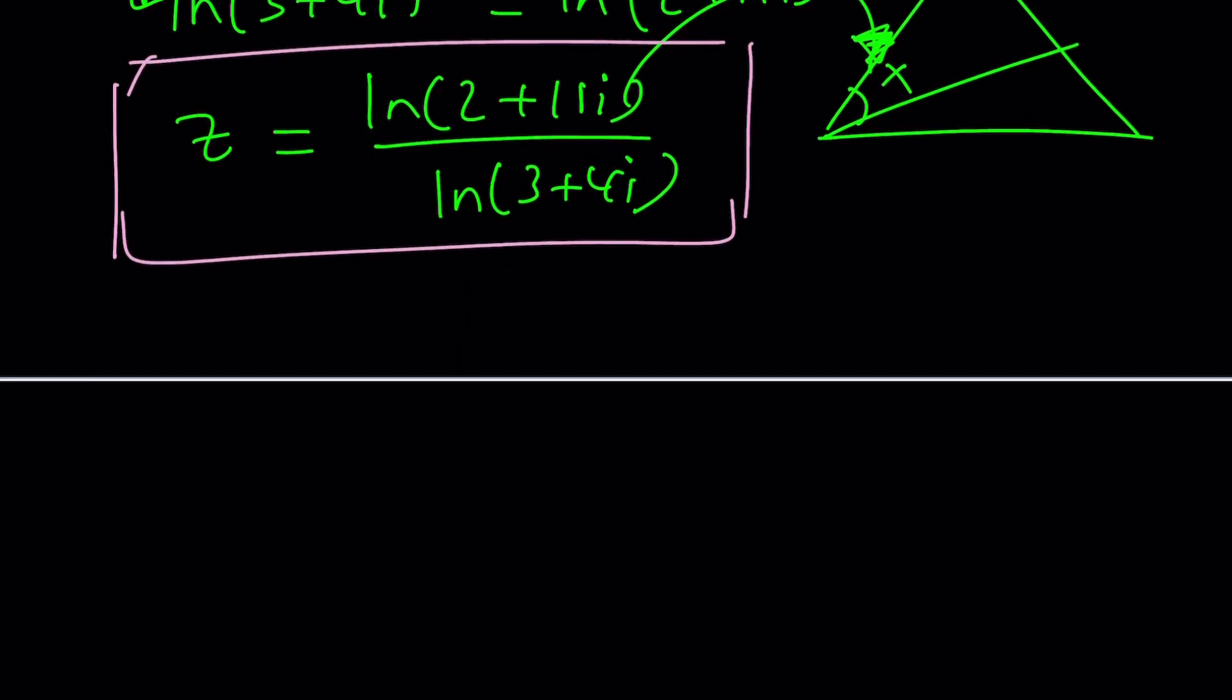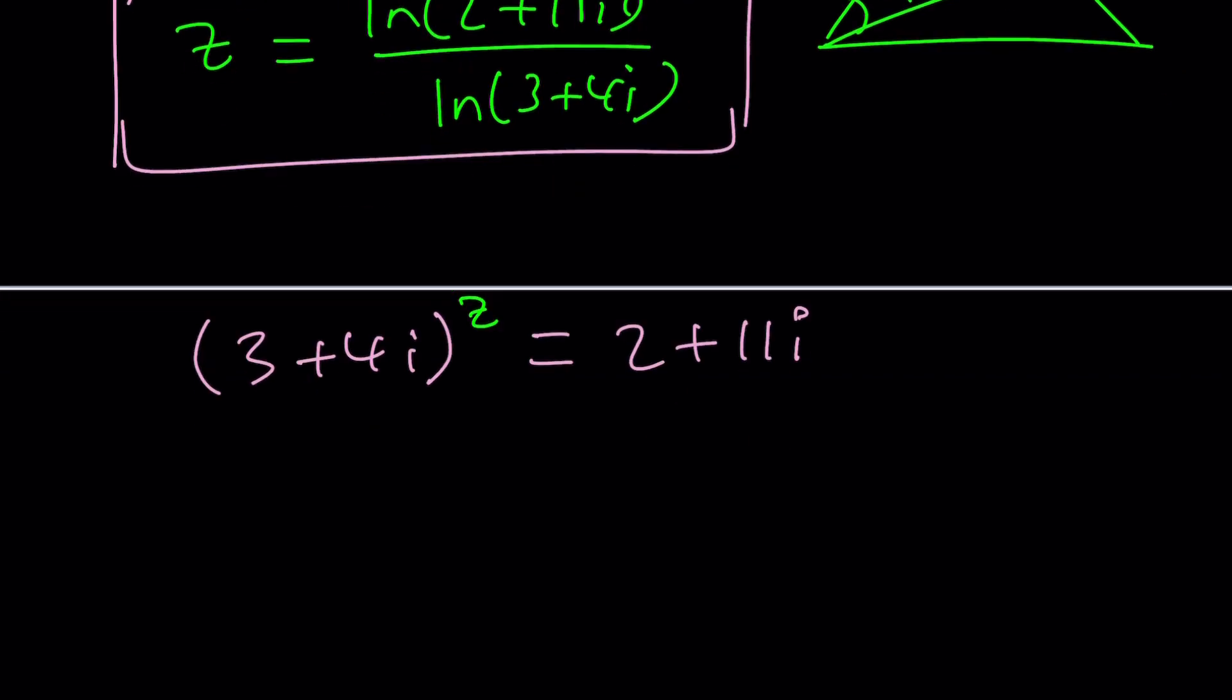Let's go ahead and look at the base, which is 3 plus 4i, right? And then the result of exponentiation, which is 2 plus 11i. One thing you can do is maybe if I square this number, I'm going to get 2 plus 11i, right? Why not? I mean, give it a try.